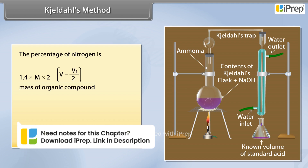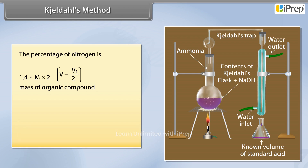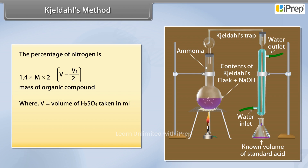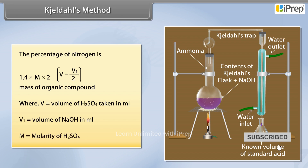Where V is equal to the volume of H₂SO₄ taken in milliliters, V1 is equal to the volume of NaOH in milliliters, and N is equal to the molarity of H₂SO₄.